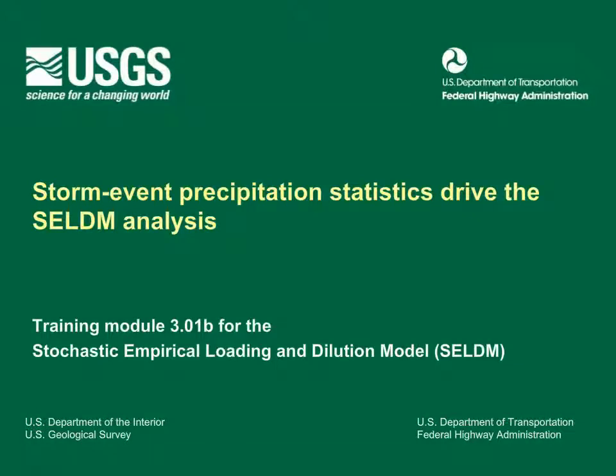This training module is an overview of synoptic storm event precipitation statistics used to model rainfall-runoff events with the Stochastic Empirical Loading and Dilution Model (SELDM). Synoptic storm event precipitation statistics are calculated by grouping hourly rainfall measurements into a series of events separated by a minimum number of consecutive hours without rainfall. These statistics commonly are used as a framework for monitoring and modeling stormwater runoff quality. This is training module 3.01b for SELDM. This presentation has 16 slides and will take about 11 minutes, and was prepared by the U.S. Geological Survey in cooperation with the Federal Highway Administration.